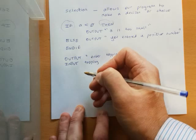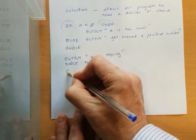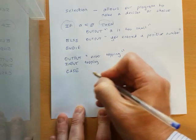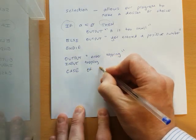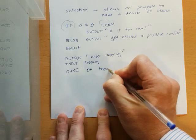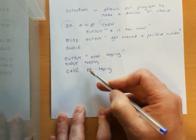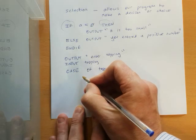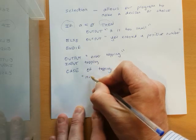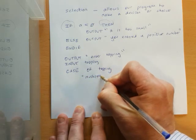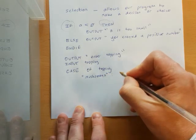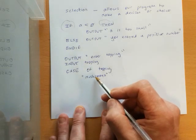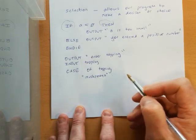So back to what we're doing. So this time we'll use the case statement. Case of topping. So it's going to look at what's being typed in here. And now we can set up our different cases. So mushrooms. And so if this case has been met, this is what we want to happen.